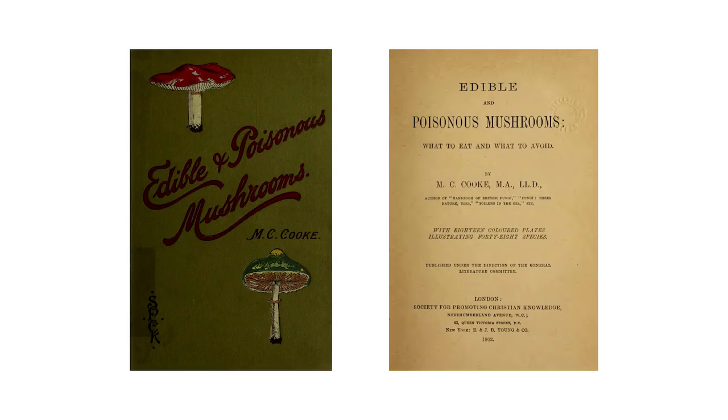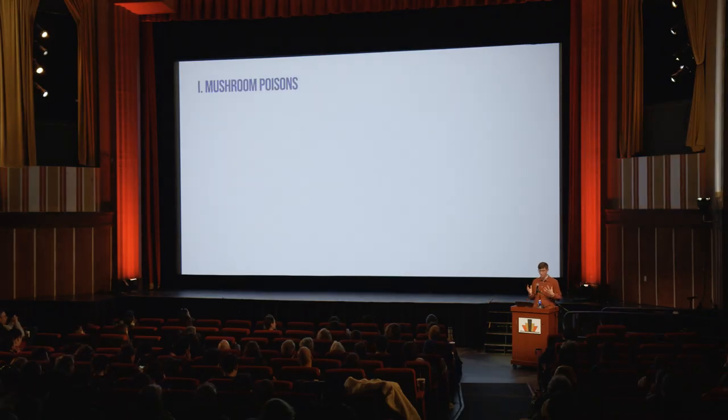At a certain point in the film — I won't ruin it — you will see a character open up this book, Edible and Poisonous Mushrooms: What to Eat and What to Avoid by Mordecai Cubitt Cook. In this short introduction, I want to give you some background on this book and on edible mushrooms during the period that the film takes place in. Hopefully by the end, you'll be primed to notice some interesting connections between food and drink, flowers and mushrooms. But first, a little bit about mushrooms and what makes them poisonous.